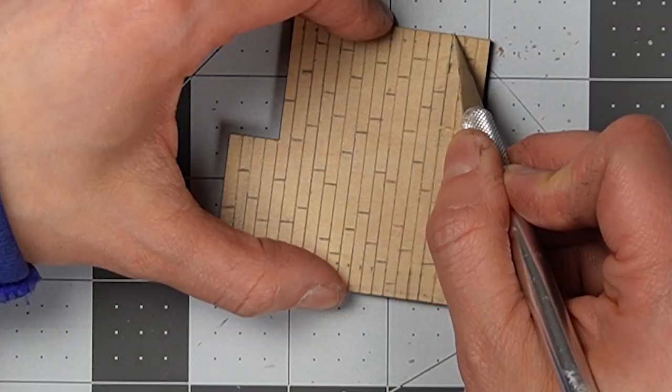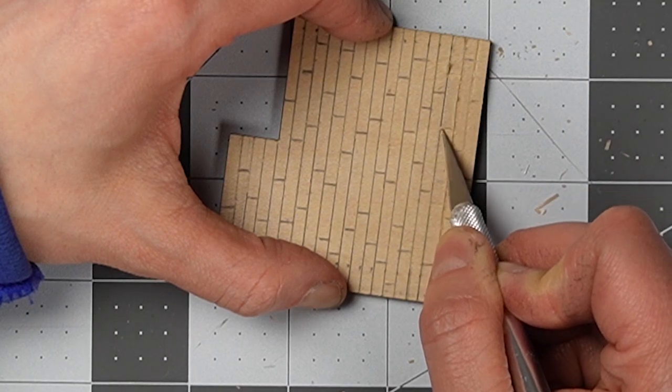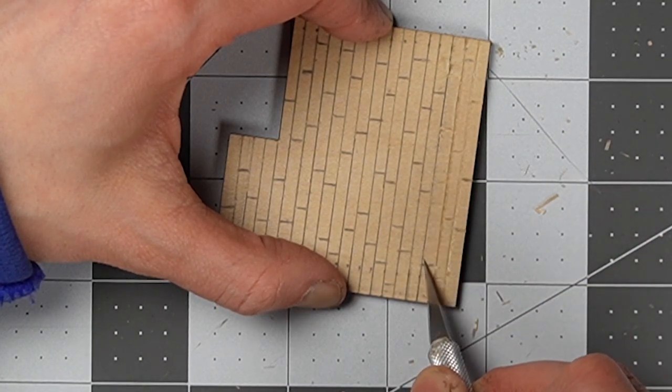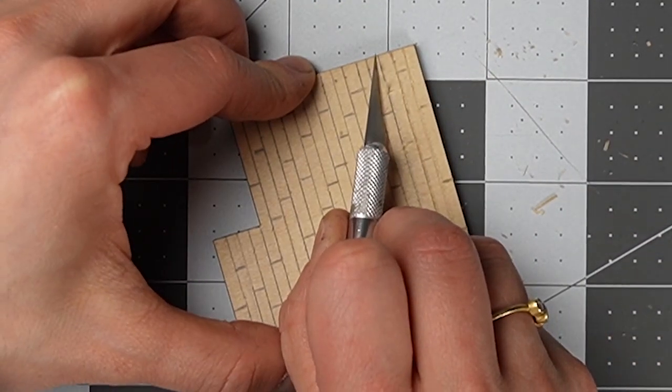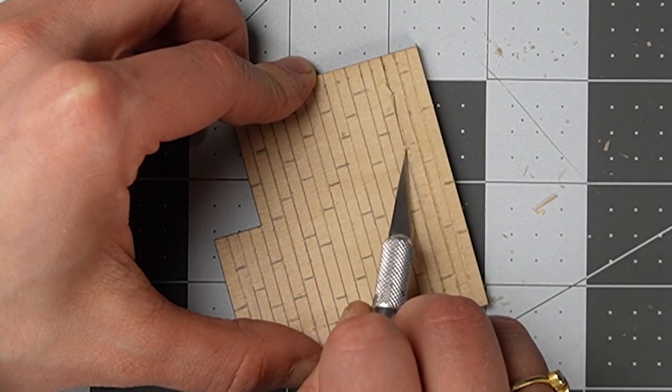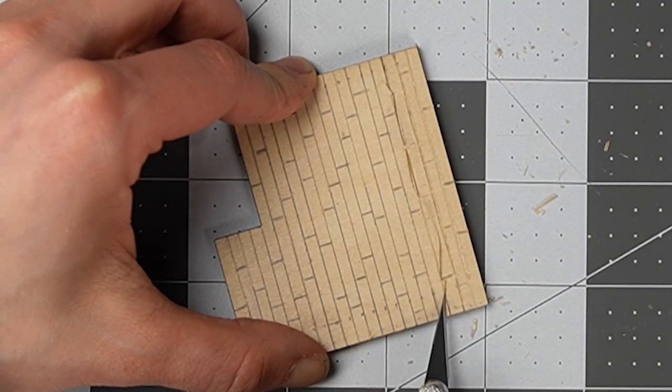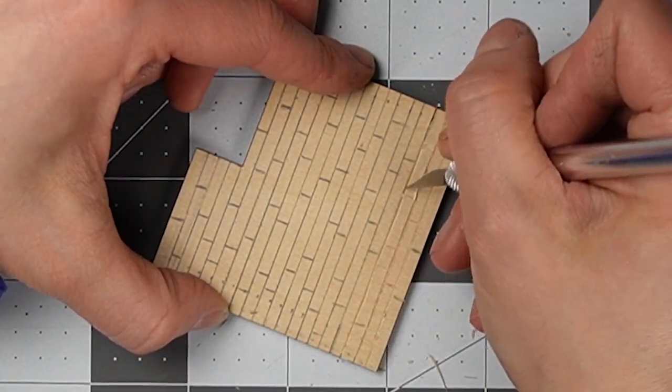For realism and dimension I am taking my exacto knife and cutting on the right side of one of my pencil lines and then I cut at an angle on the other side like a v-shaped channel to fake a space between the boards.